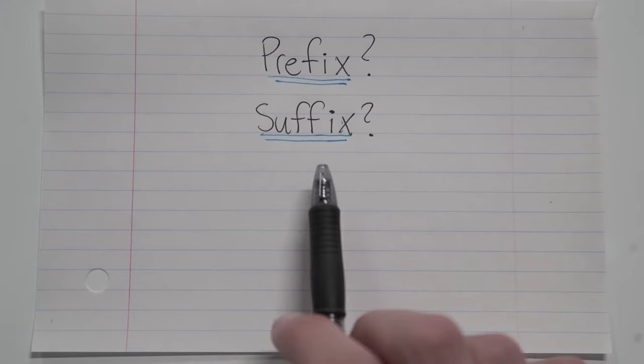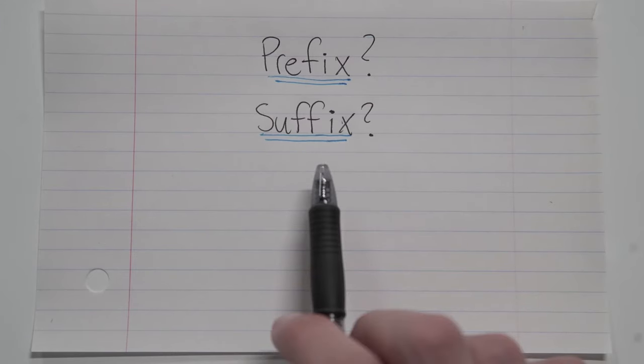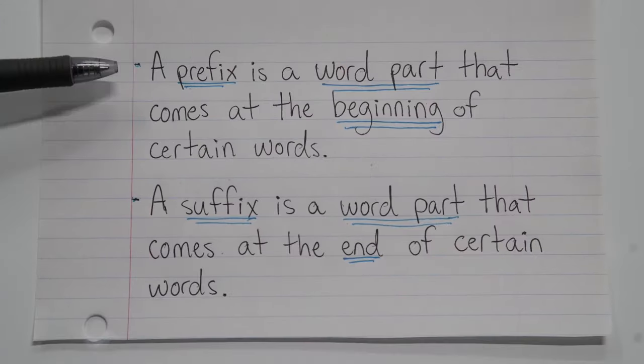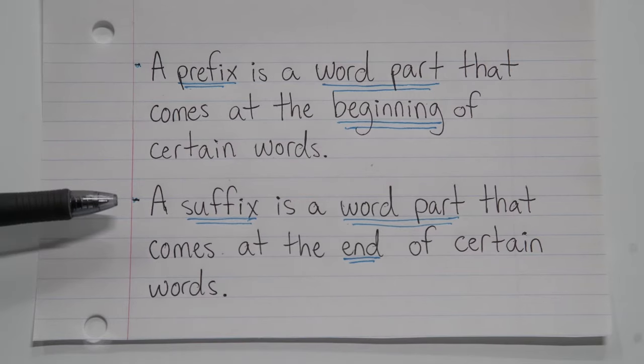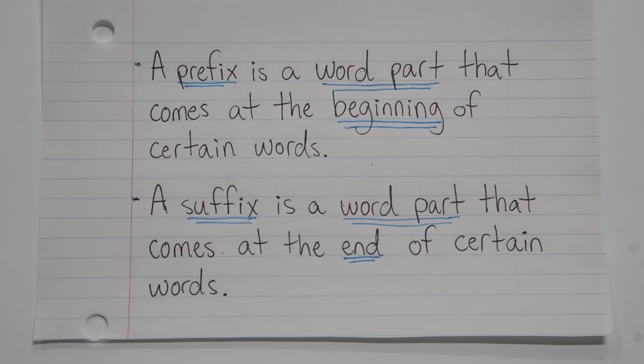So what exactly are prefixes and suffixes? Well, a prefix is a word part that comes at the beginning of certain words, and a suffix is a word part that comes at the end of certain words. And I say certain words because not all words have prefixes and suffixes.